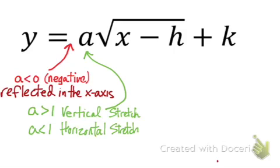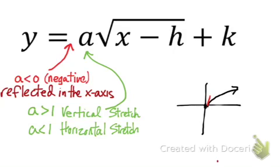Let me draw a quick coordinate system to illustrate. If our parent function looks like a standard curve, a vertical stretch of the square root function would be a lot taller. And then our horizontal stretch would be a lot shorter and closer to the x-axis. So this is a horizontal stretch and this is a vertical stretch.